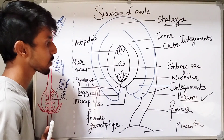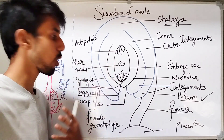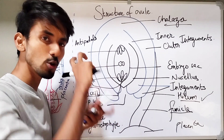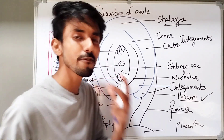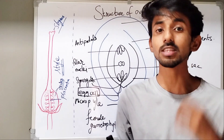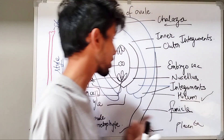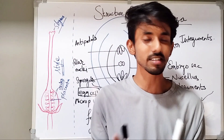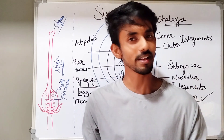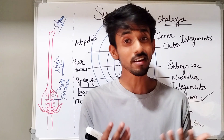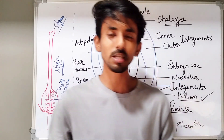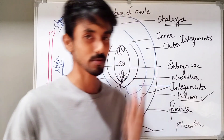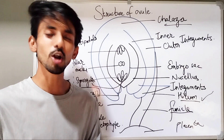So, this is the complete structure of an ovule. Now, on the basis of the attachment of the funicle to the ovule, and also on the basis of the positioning of the chalaza and the micropyle, there are different types of ovule. In the next video, we are going to see those different kinds of ovule along with the detailed structure and functions of the embryo sac. I hope all the concepts in this video are crystal clear to you. If you still have any doubts, you can mention them in the comment box. Do not forget to subscribe to my channel.